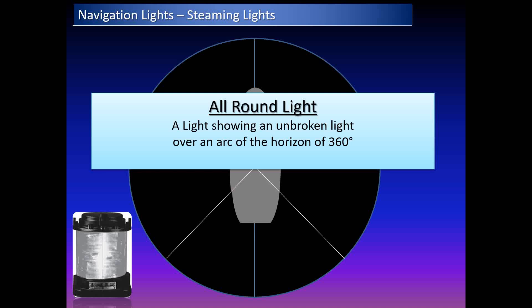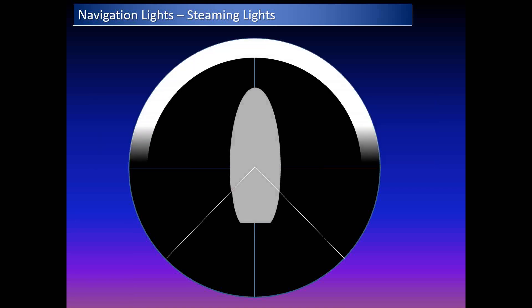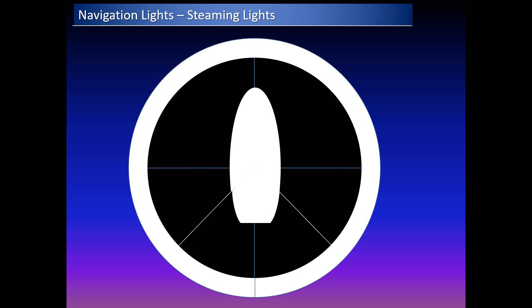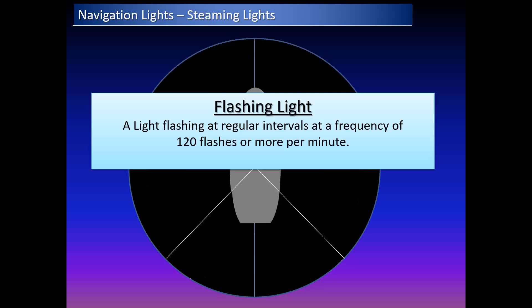The all-round light means a light showing an unbroken light over the full arc of the horizon of 360 degrees, so it can be seen from whichever angle you approach the vessel. Examples of all-round lights include anchor lights, not-under-command lights, and restricted-in-ability-to-maneuver lights.